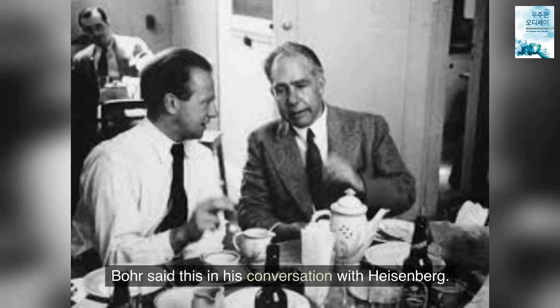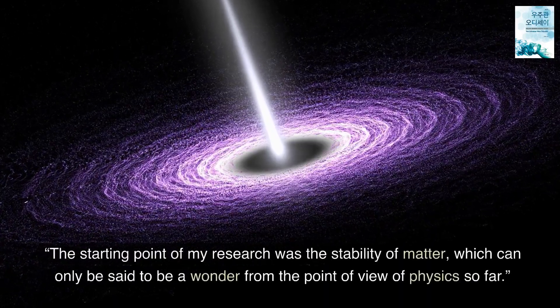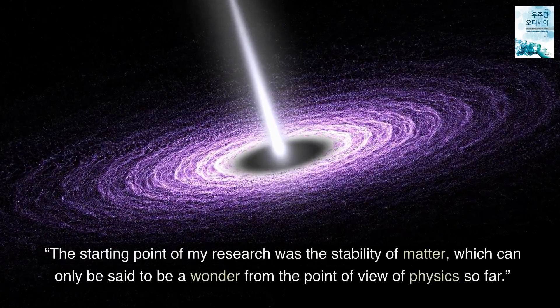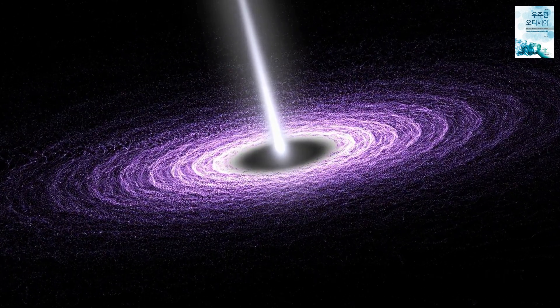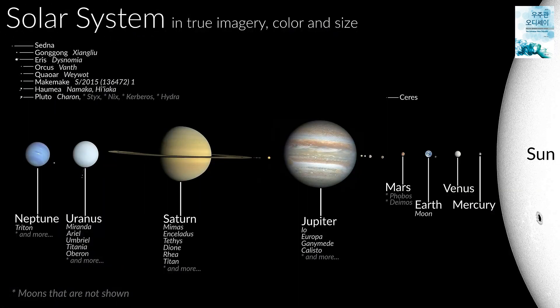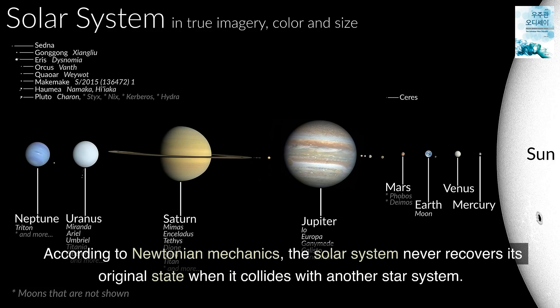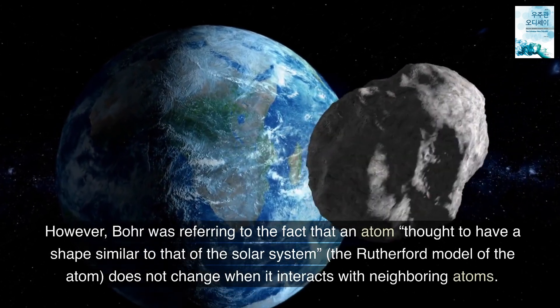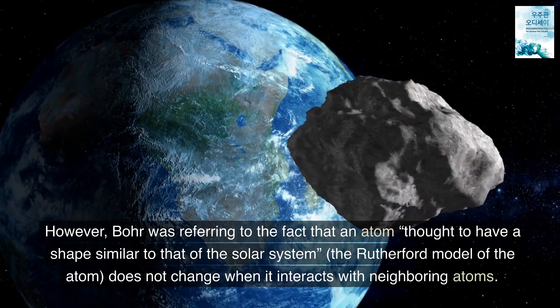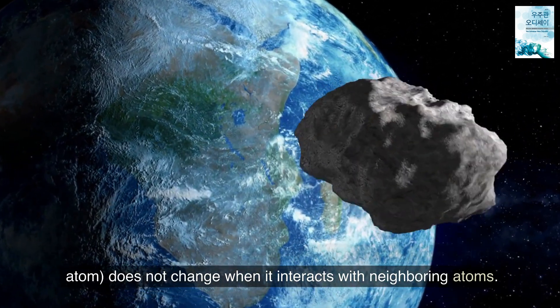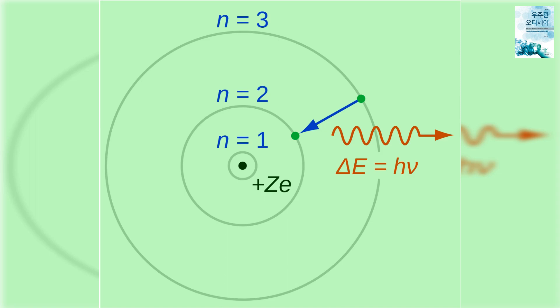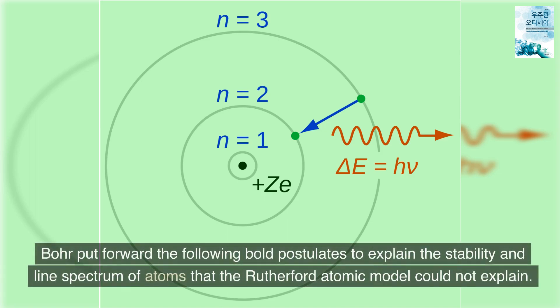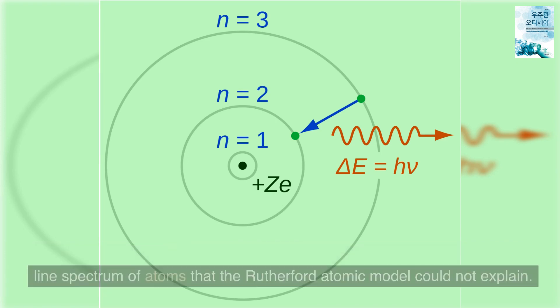Bohr said this in his conversation with Heisenberg. The starting point of my research was the stability of matter, which can only be said to be a wonder from the point of view of physics so far. According to Newtonian mechanics, the solar system never recovers its original state when it collides with another star system. However, Bohr was referring to the fact that an atom, thought to have a shape similar to that of the solar system, the Rutherford model of the atom, does not change when it interacts with neighboring atoms. Bohr put forward the following bold postulates to explain the stability and line spectrum of atoms that the Rutherford atomic model could not explain.